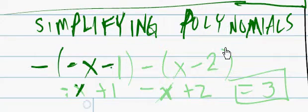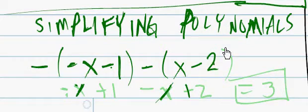Negative, negative x, minus 1, negative x, minus. Now, remember, we've got distributive properties here.